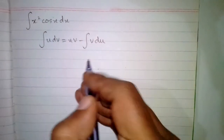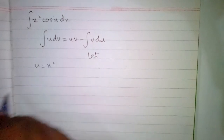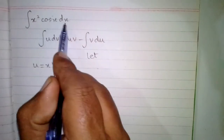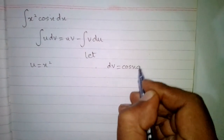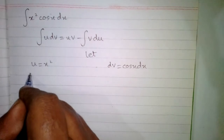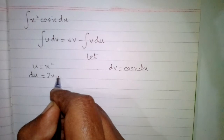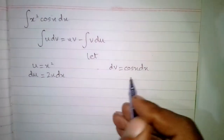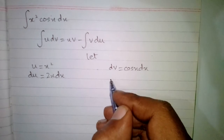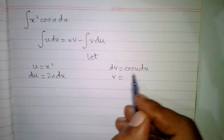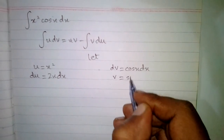Let u equal x squared and dv equal cos x dx. The differential du is equal to the derivative of x squared, which is 2x dx. We then integrate dv to find v, and the integral of cos x with respect to x is sin x.